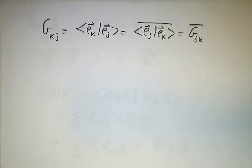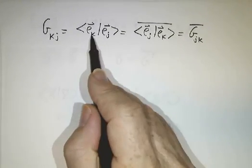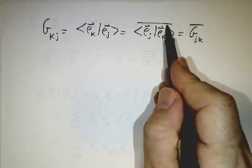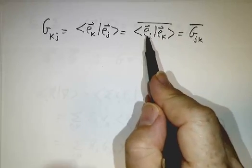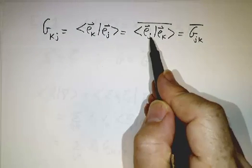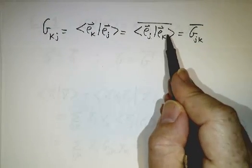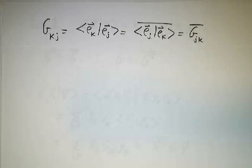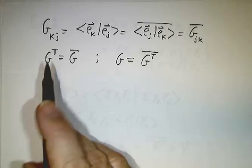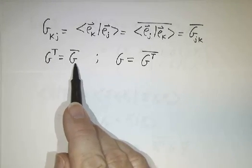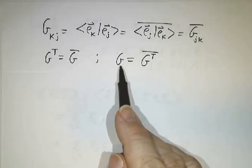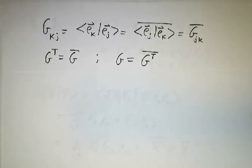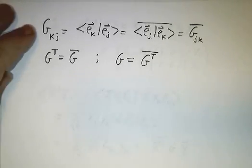If you look at the entry G_kj, that's the inner product of e_k with e_j, which is the inner product of e_j with e_k conjugate, because when you swap the order, you have to conjugate the result if it's a complex vector space. So that's G_jk conjugate. In other words, the transpose of G is the conjugate of G. Or you can say that if you take the transpose of G and then conjugate that, you get back G.